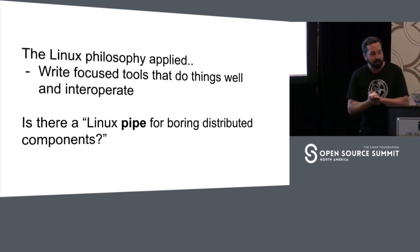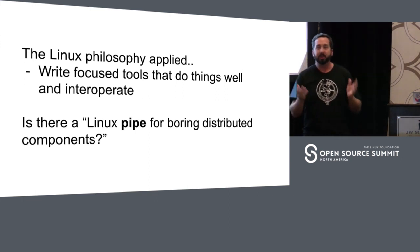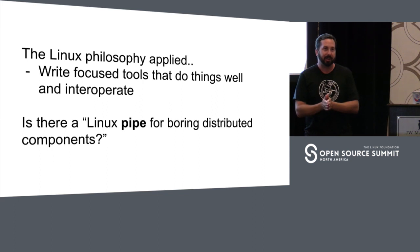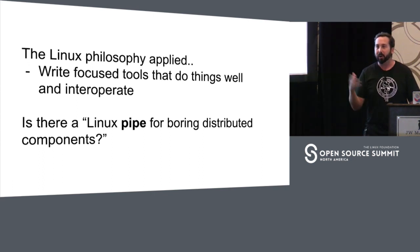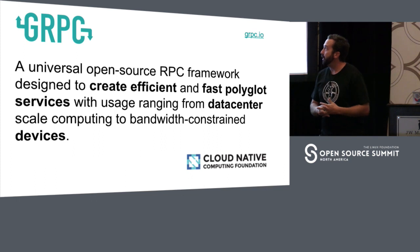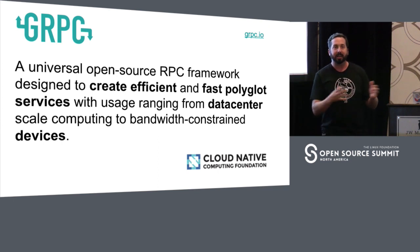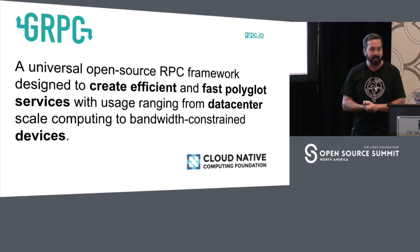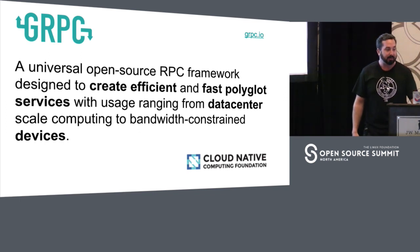The Linux philosophy applied: in Linux the idea is you want to write focused tools that do their job well and also interoperate with other things. How do Linux tools communicate? The Linux pipe. What we're really looking to do is create essentially a Linux pipe for distributed components — and that is gRPC. gRPC is a universal open source RPC framework designed to create efficient and fast polyglot services, with usage ranging from data center scale to bandwidth-constrained devices like a mobile phone traveling between different parts of the world.